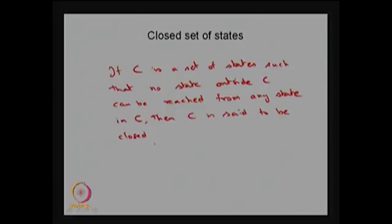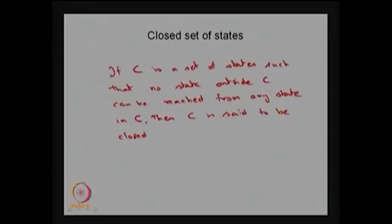We can combine the class property with the closed set property. If both properties are satisfied — the states communicate with each other as well as the closed property is satisfied — then we can say it is a closed communicating class. Any subset in the state space S satisfying both conditions is called a closed communicating class.